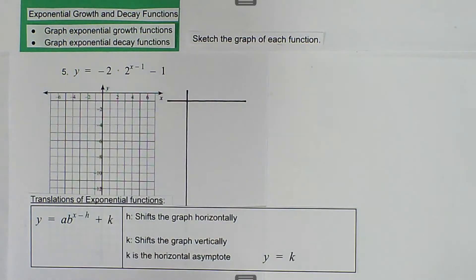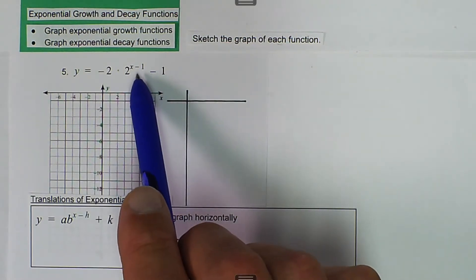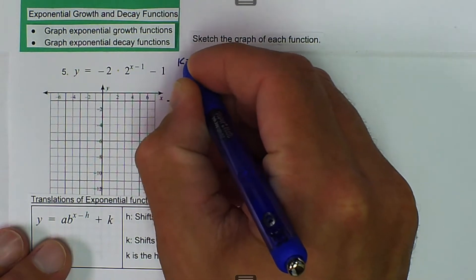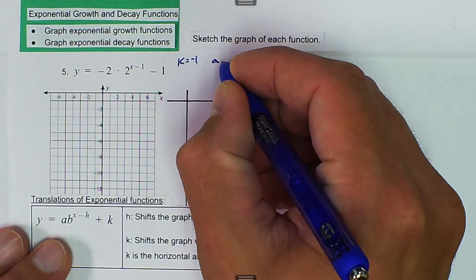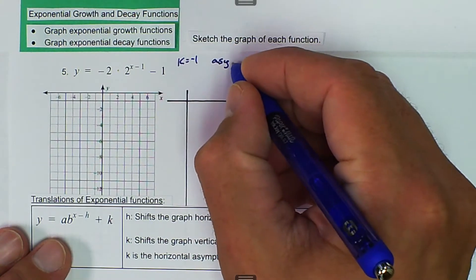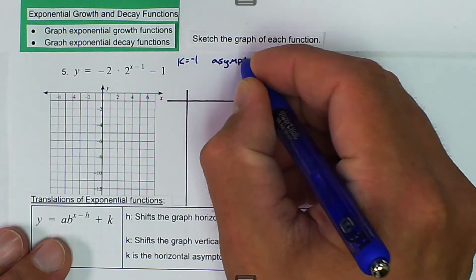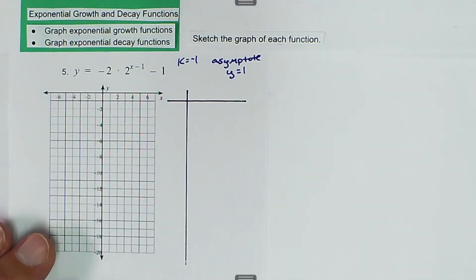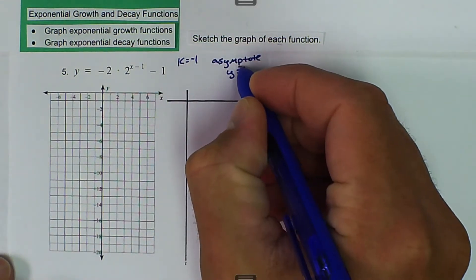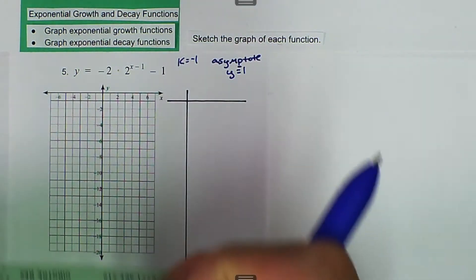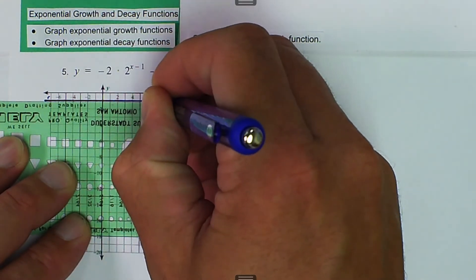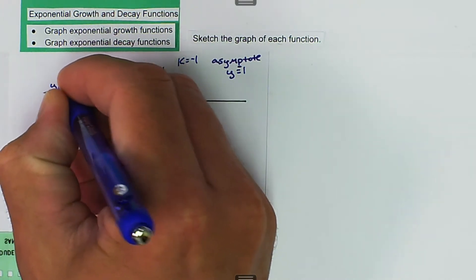The b value is 2, so we know we have exponential growth. The h value is negative 1, so we're actually going to shift to the right because we're substituting in a negative 1 for h. And the k value is equal to negative 1, and because the k value is equal to negative 1, that's going to tell us that our asymptote is y equals negative 1, which is right there.